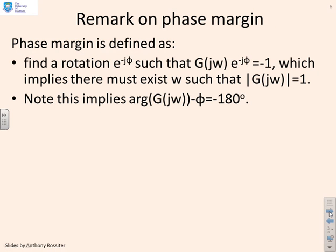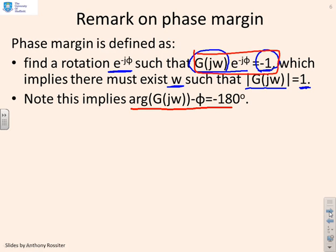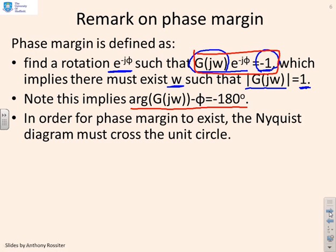Let's add some formal mathematics here. We're saying: find a rotation e^(−jφ) such that g(jω) × e^(−jφ) = −1. Notice that e^(−jφ) is a pure rotation. So we're applying a pure rotation to g(jω) and asking what pure rotation gives us minus 1. To solve this, we must first find a frequency ω such that the modulus of g(jω) equals 1, because the modulus of e^(jφ) is 1, so all the gain change must come from g. Looking at the phases, you get: arg(g(jω)) − φ = −180 degrees. So for the phase margin to exist, the Nyquist diagram must cross the unit circle.